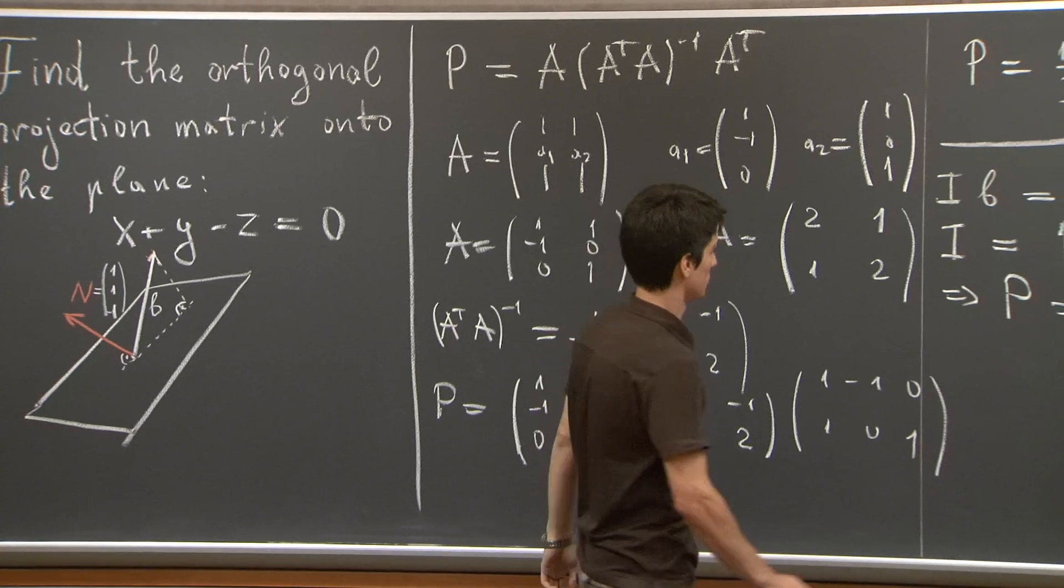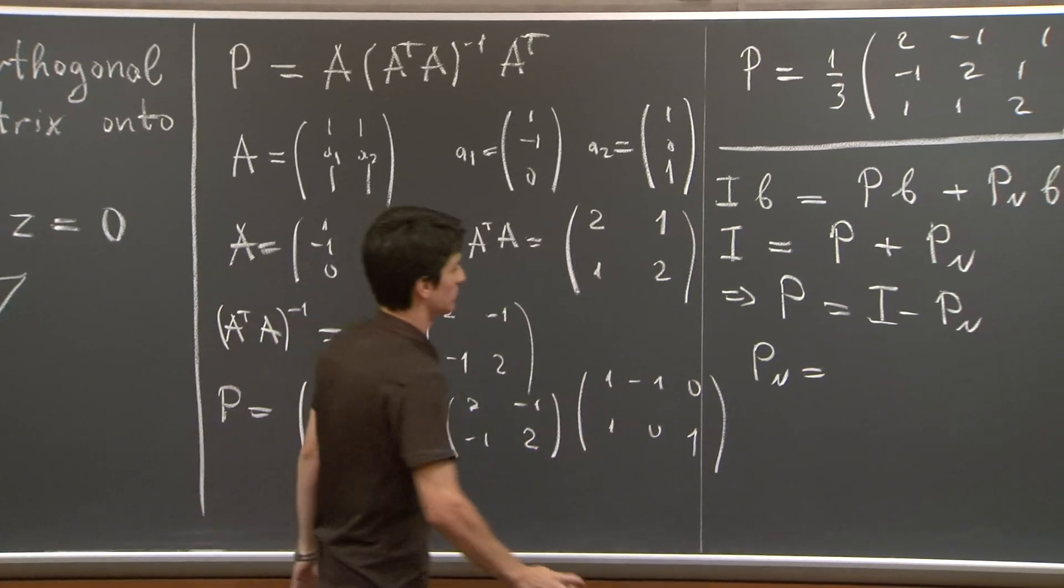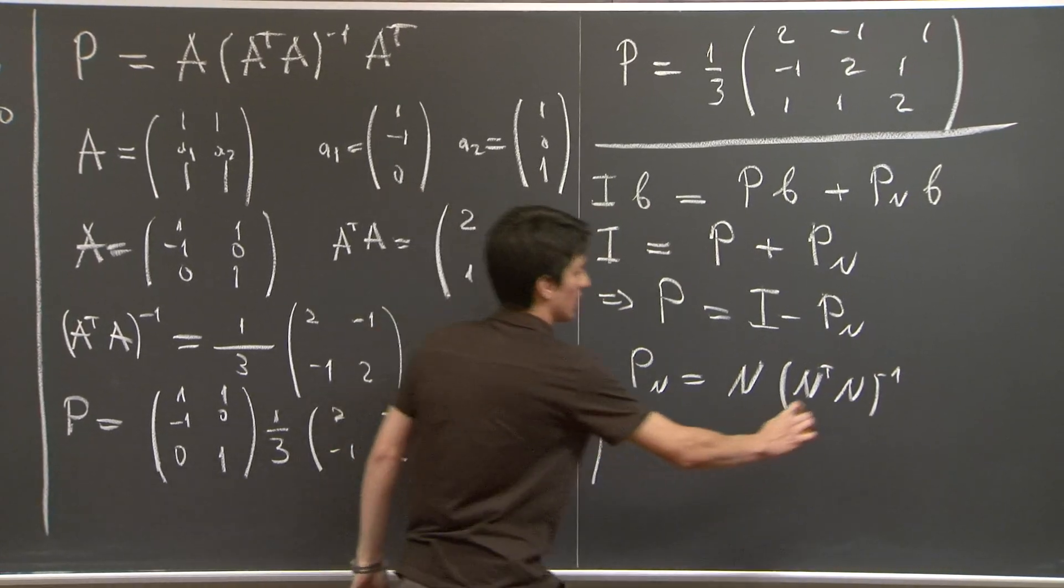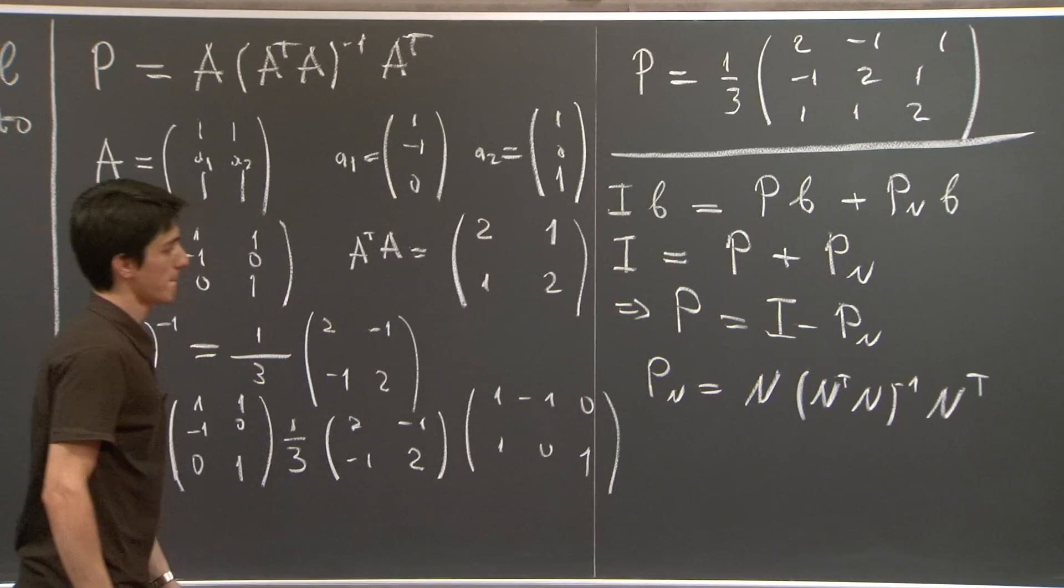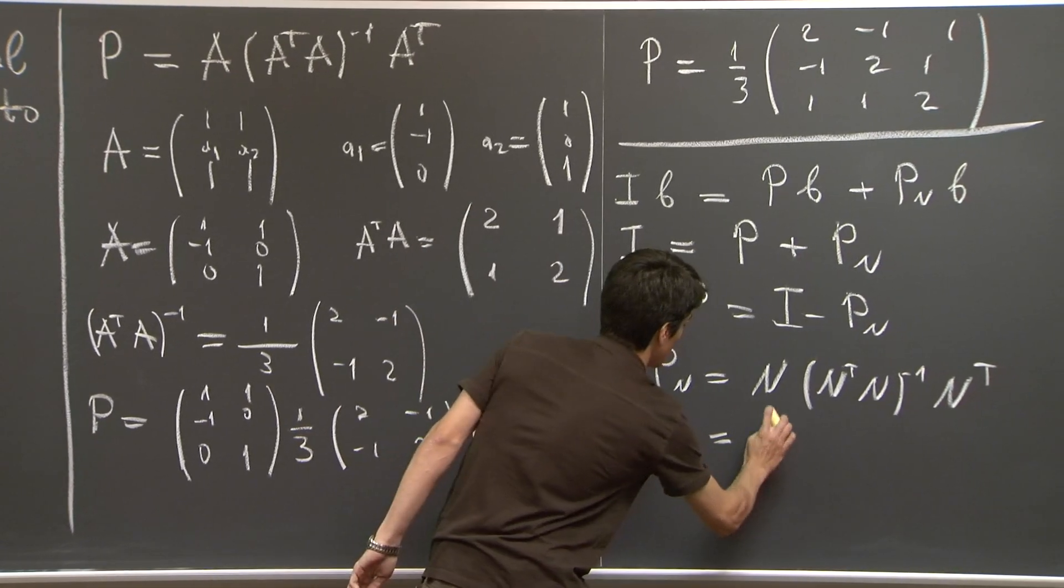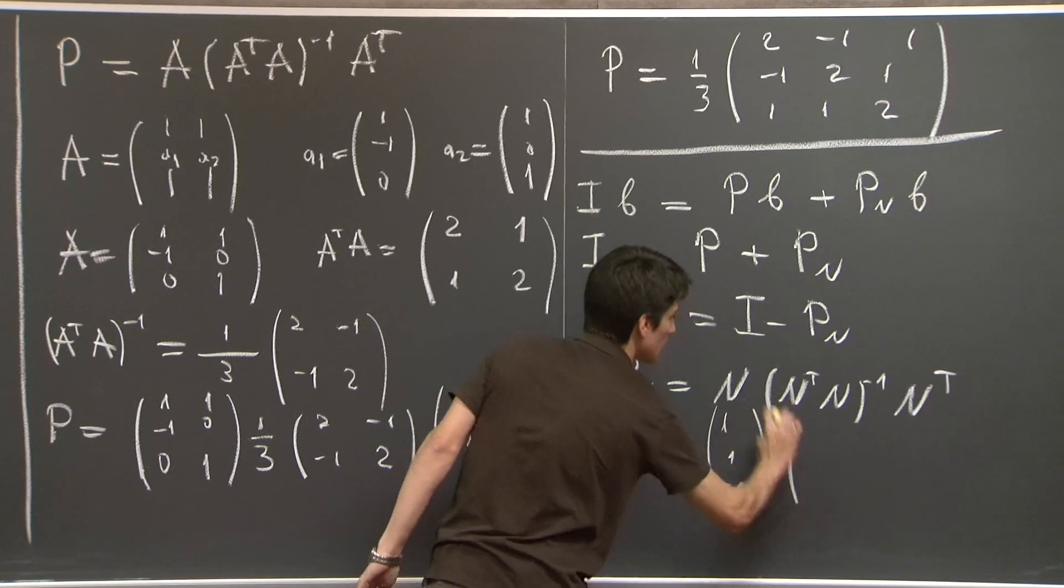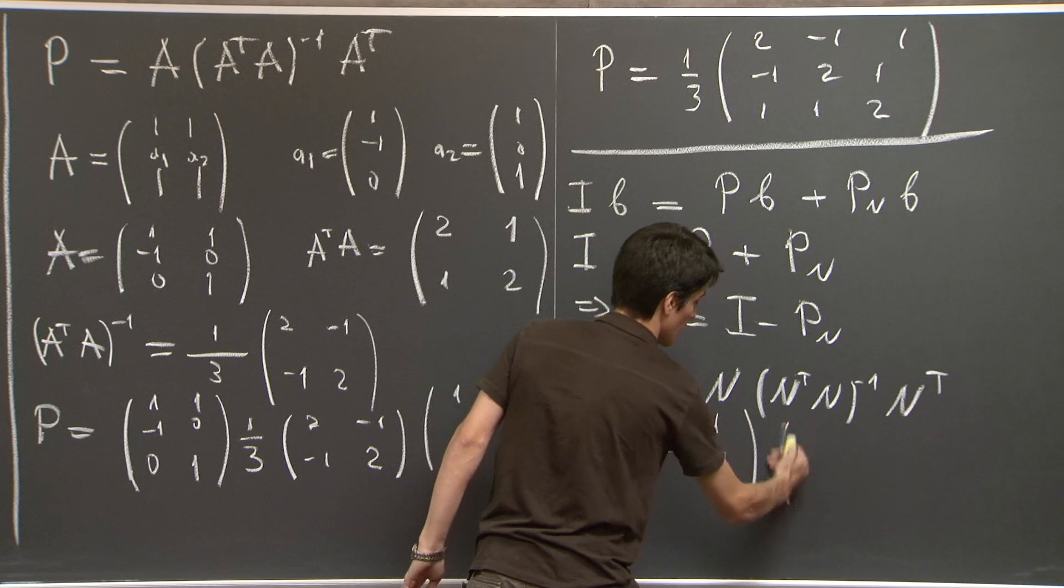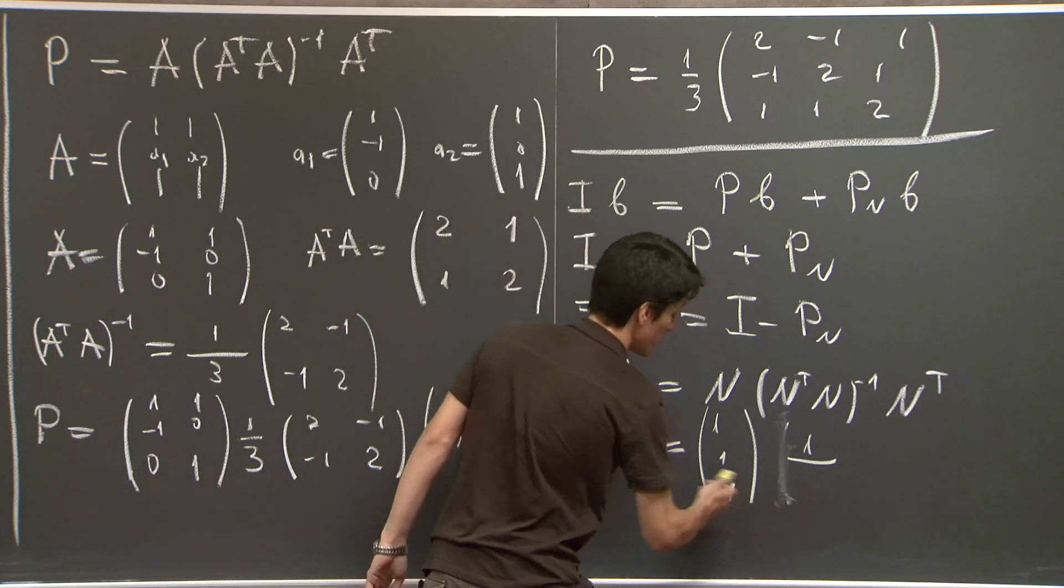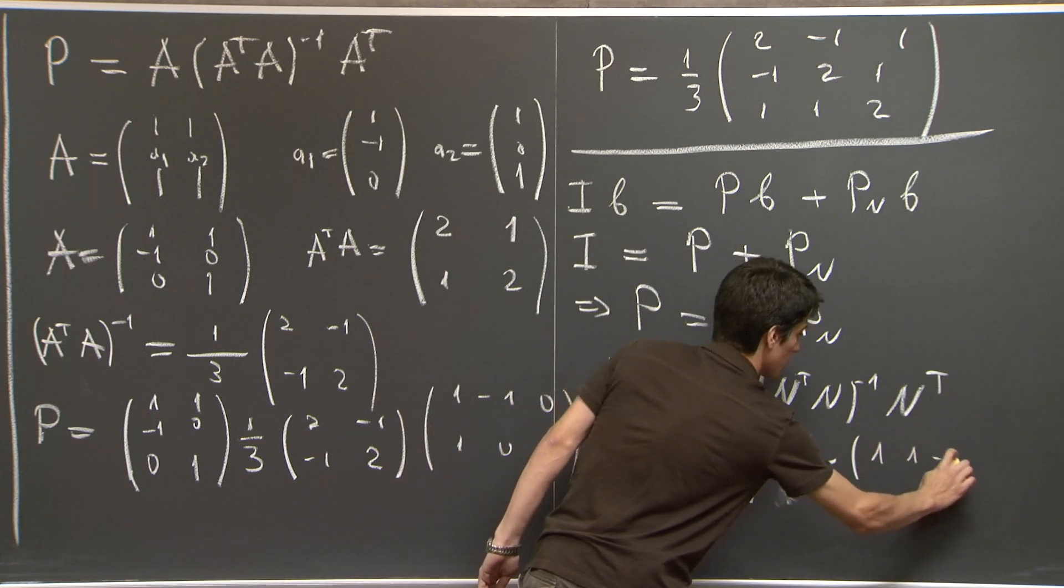OK, so essentially, PN will be N N transpose N inverse N transpose. And that's equal to 1, 1, negative 1. And N transpose N inverse, this is just a number. It's 1 over the magnitude of the normal vector. So that's the magnitude squared. So that's 3 and 1, negative 1.